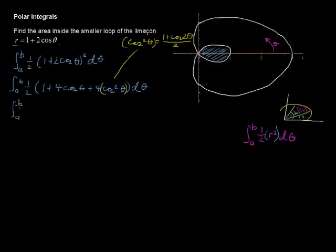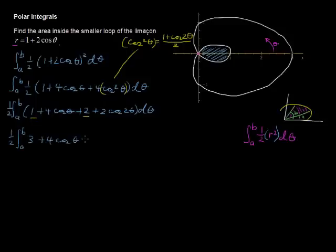So we get from a to b, I promised I'd move that ½ outside, here it is: ½ integral (1 + 4cos(θ) + 2 + 2cos(2θ)) dθ. And now I'm going to combine these like terms, this 1 and this 2, and we get ½ integral from a to b of (3 + 4cos(θ) + 2cos(2θ)) dθ.